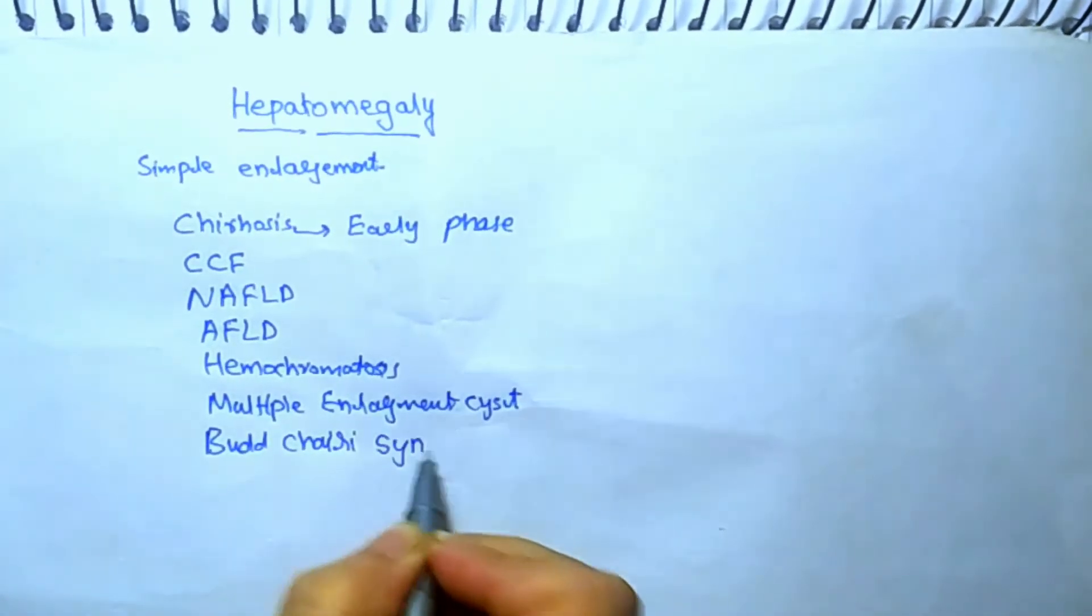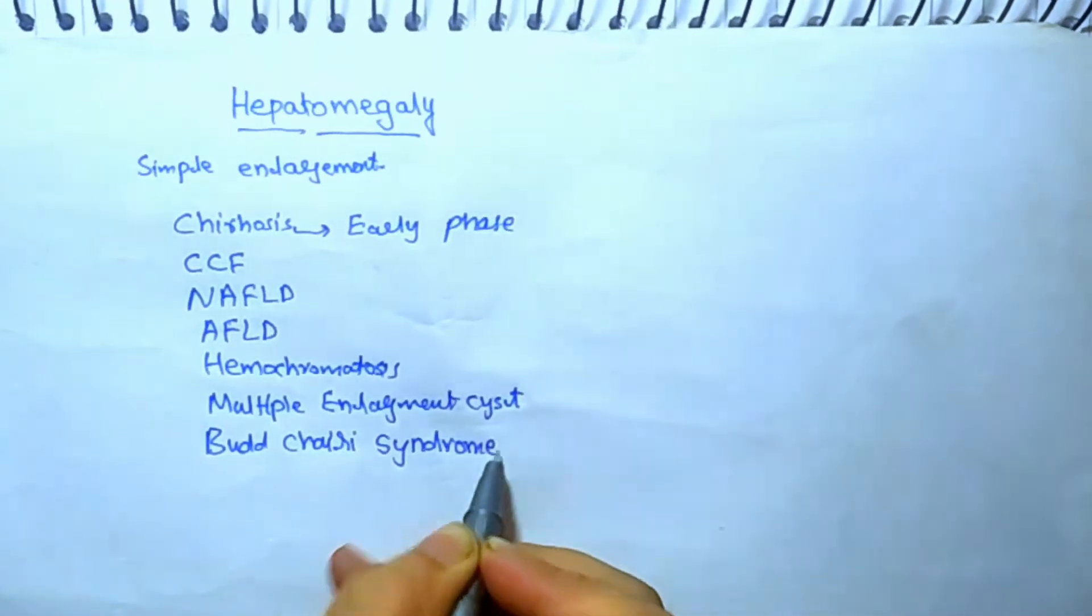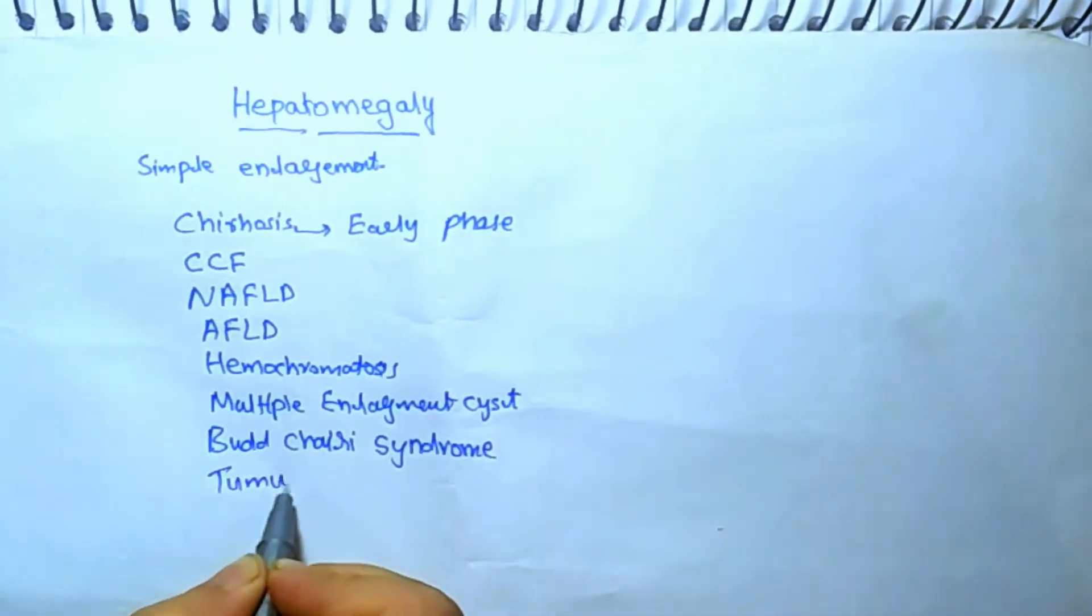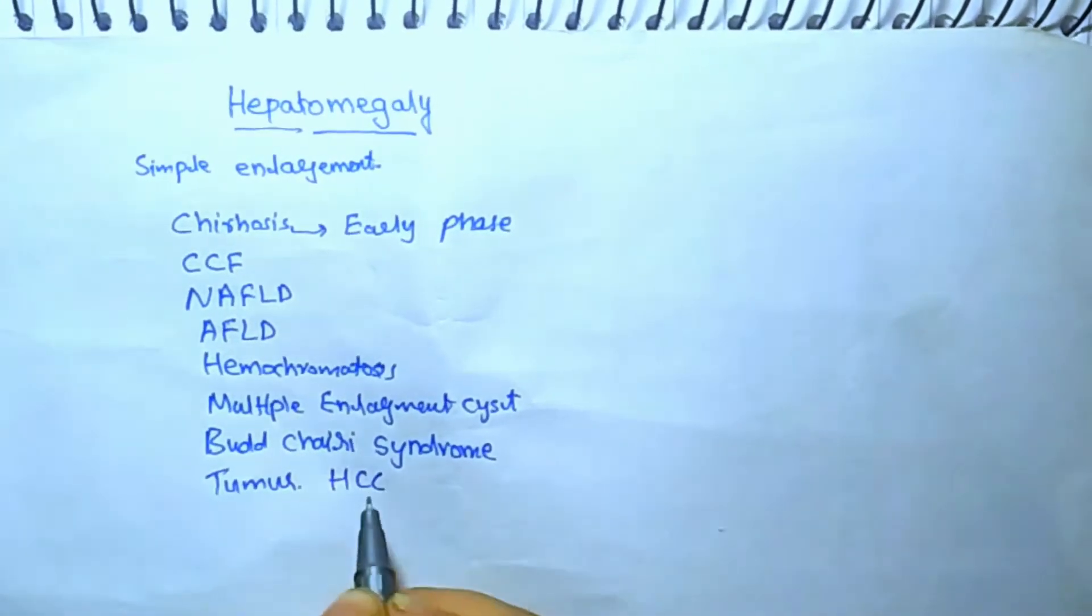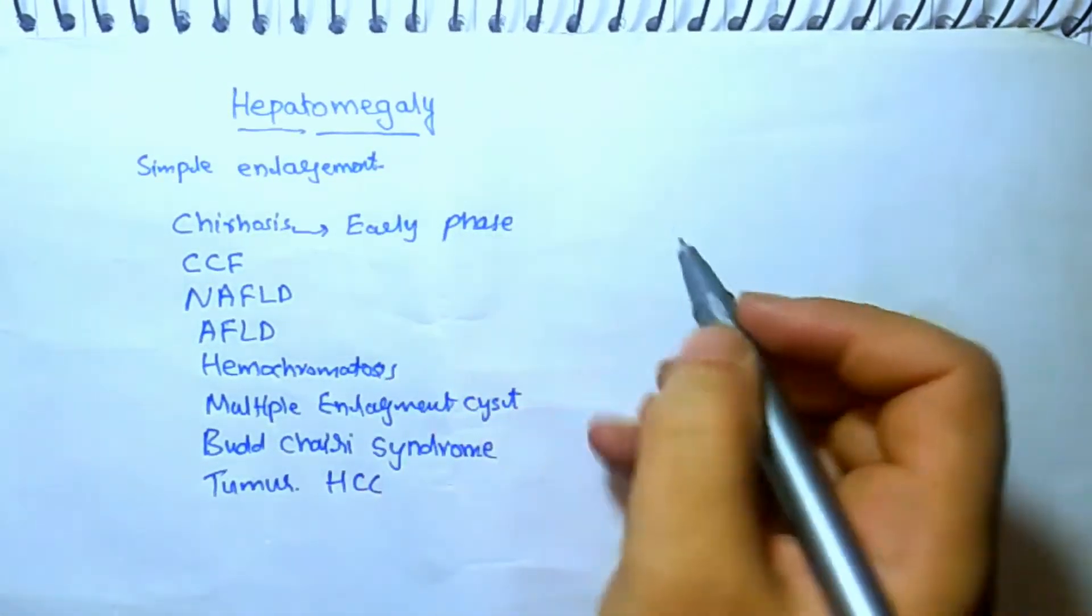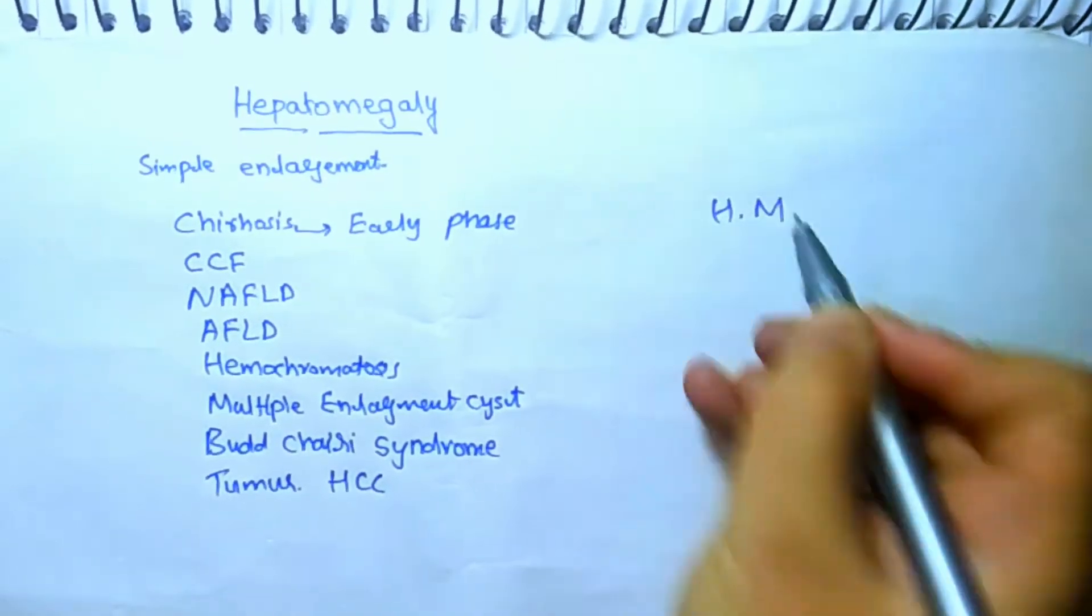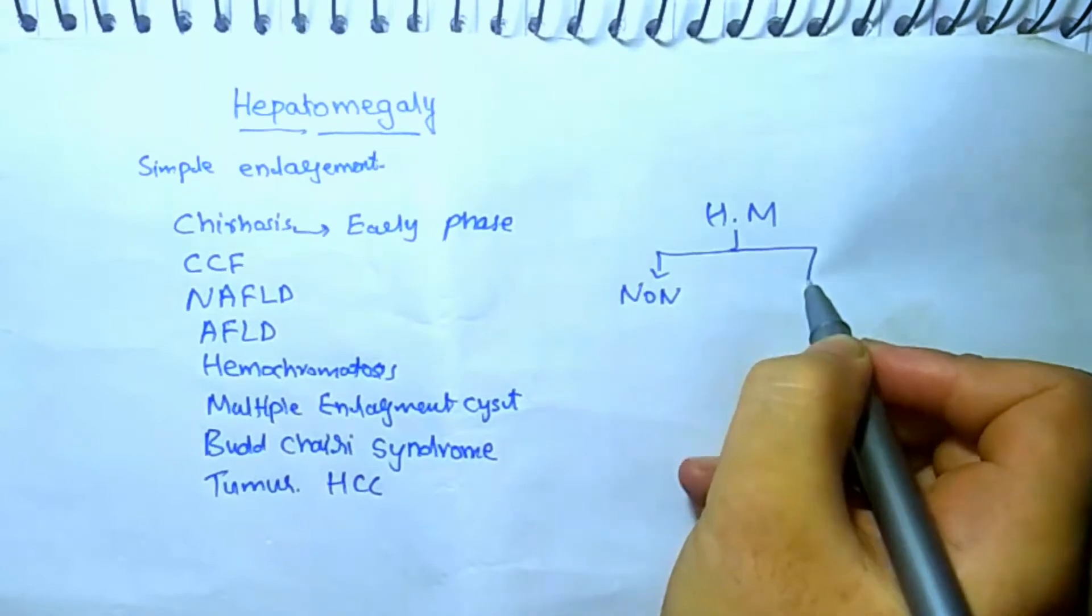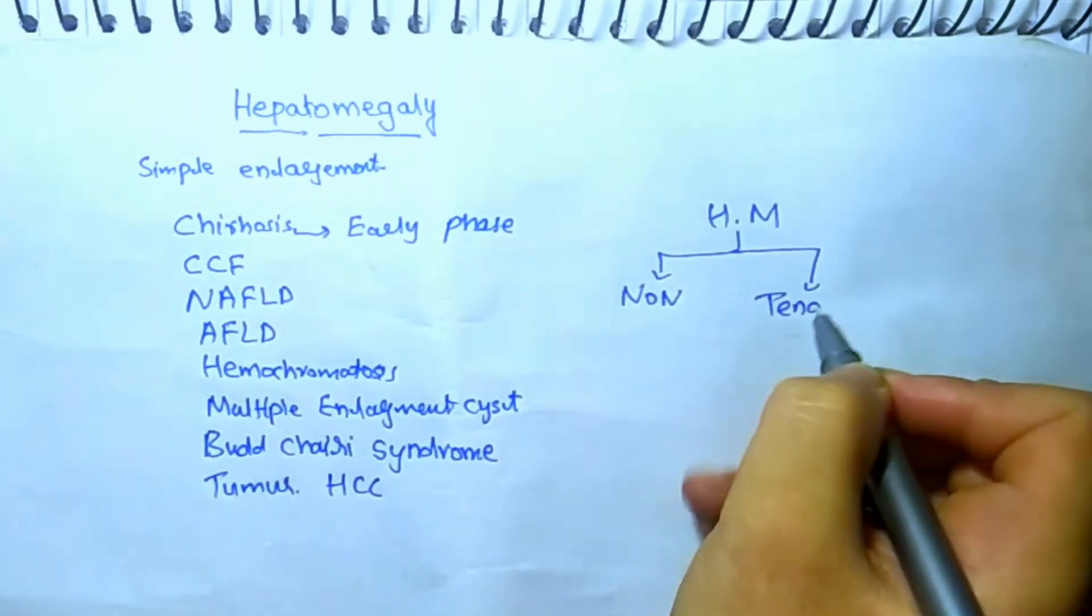Budd-Chiari syndrome and tumors like hepatocellular carcinoma. We will divide hepatomegaly into two main types: one is non-tender hepatomegaly and another is tender hepatomegaly.